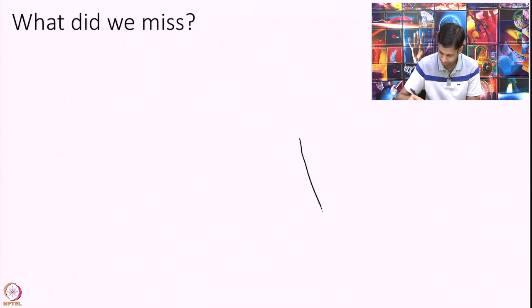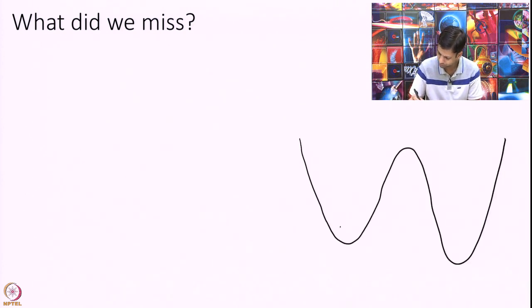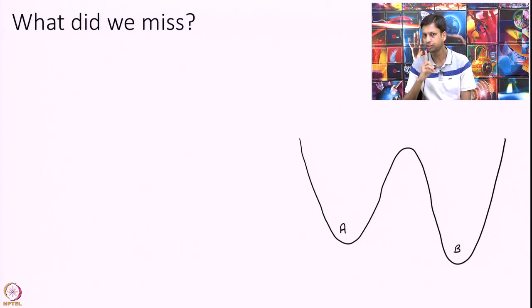Let us, now we have started thinking in the language of energy surfaces. We have A here, we have B here. Where is A star? That is the question you should start thinking. Pause the video and tell me where is A star. Think about it. I will give the answer in 5 seconds. 5, 4, 3, 2, 1.